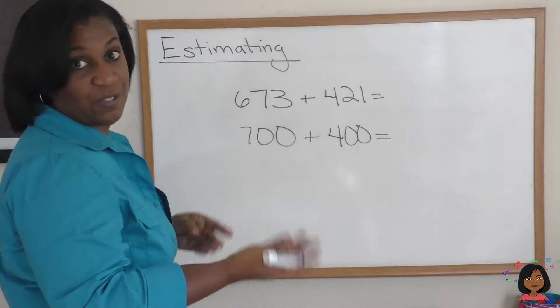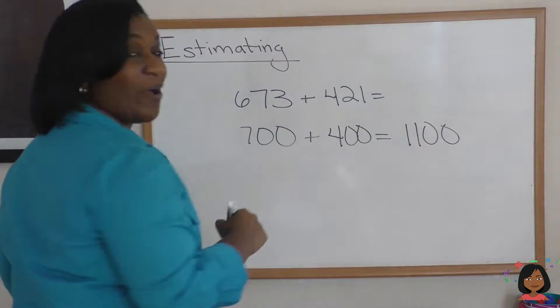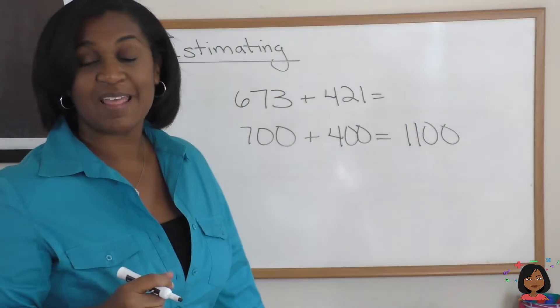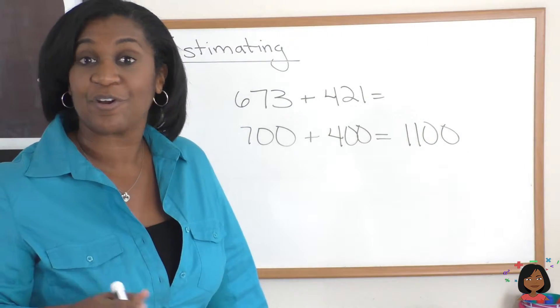700 plus 400 is 1100, and that gives you an idea of an estimate of what those two numbers added together might be.